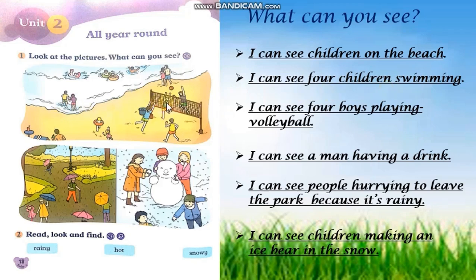Let's go to the next. Can you see some children? What are they doing? They are playing volleyball on the beach. How many children? One, two, three, and four. So, you're going to say: I can see four boys playing volleyball.